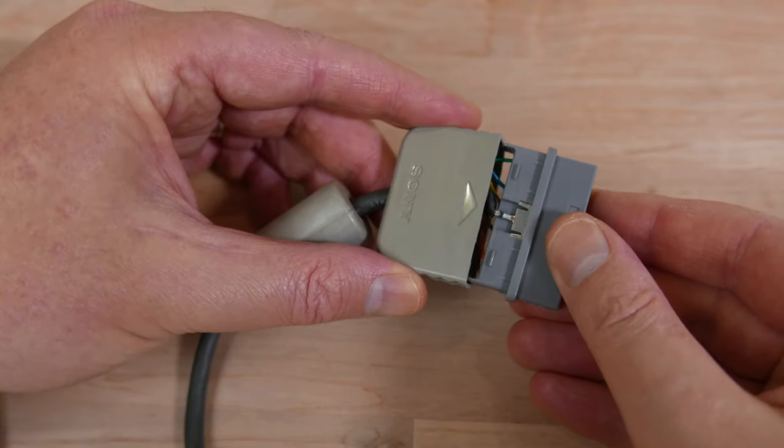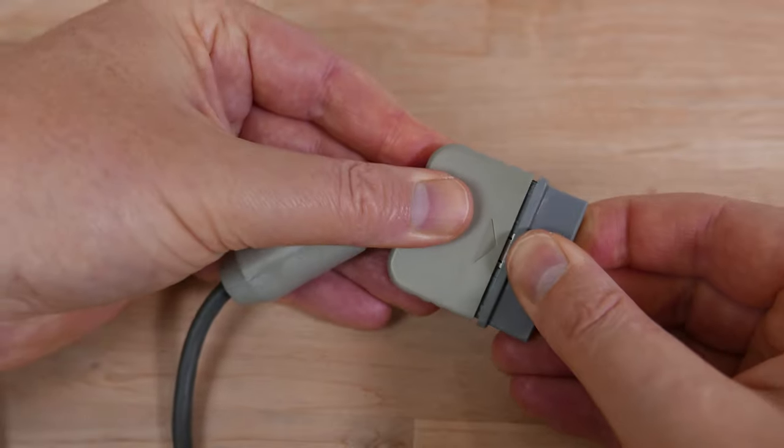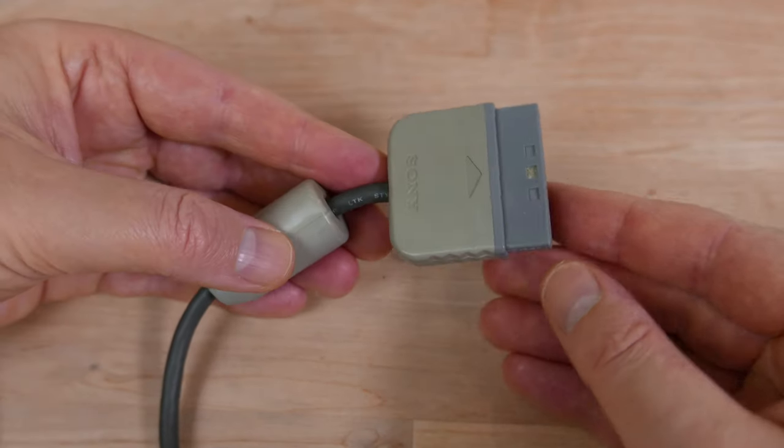To close the connector again, just line up the two halves, push them together, and they'll snap back into place.